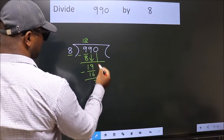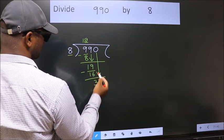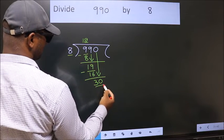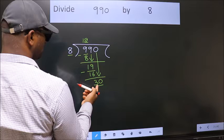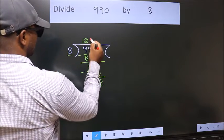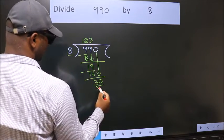After this, bring down the beside number. So, 0 down. So, 30. A number close to 30 in 8 table is 8, 3s, 24.